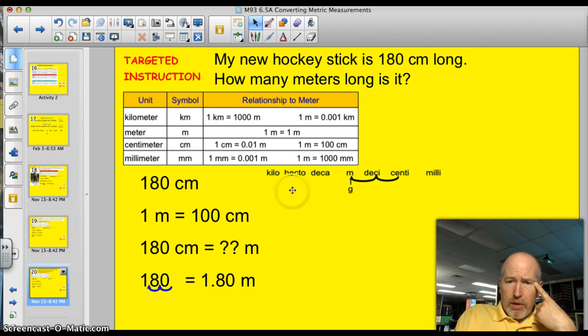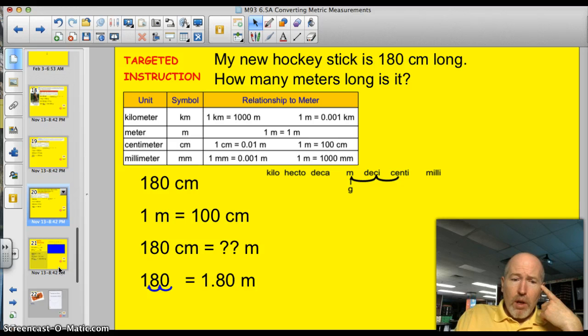Let me just see if that makes sense. I was at centimeters. I know that 1 meter is 100 centimeters. So I'm not going to have 2 meters, right? It's going to be a little bit less, and that is a little bit less. 1.8 meters. My answer makes sense. It checks out.